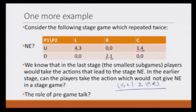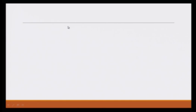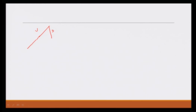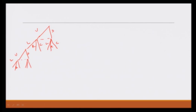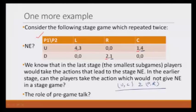Let us see what happens in the game tree. Player 1 moves first and can take one of two actions, U or D, and then player 2 moves. Player 2 does not know which action player 1 took — left, right, and center. And then again player 1 moves U or D, and player 2 moves again without knowing the action of player 1. We will again have to use backward induction to solve the game. In any last stage, players are basically playing the stage game given in the table.